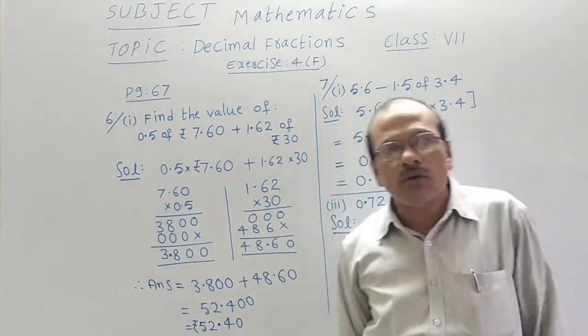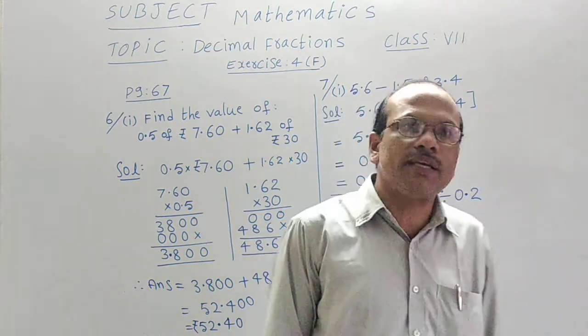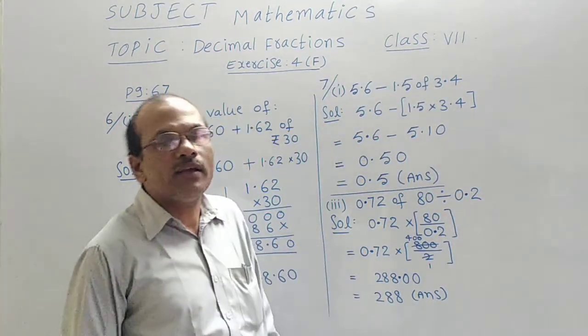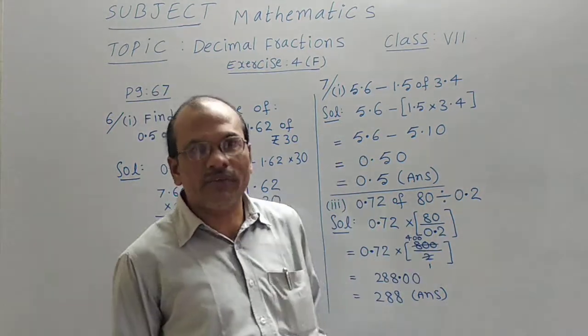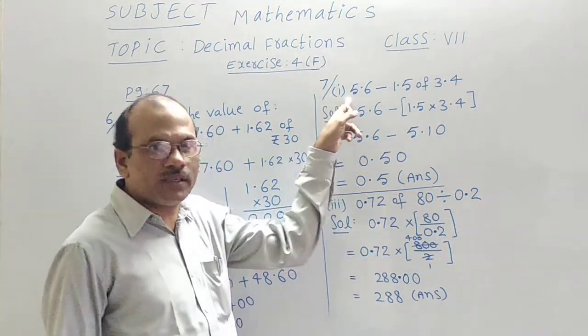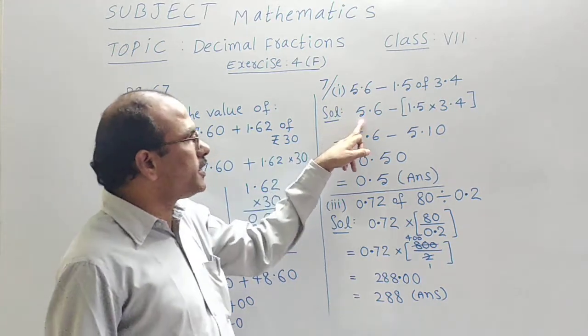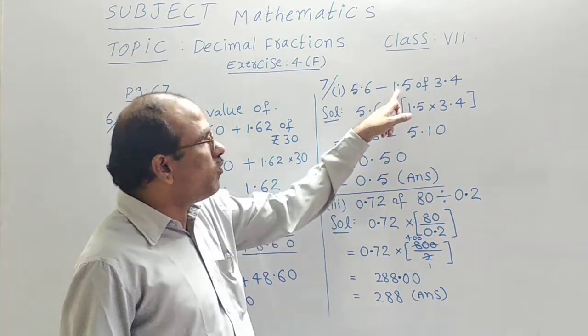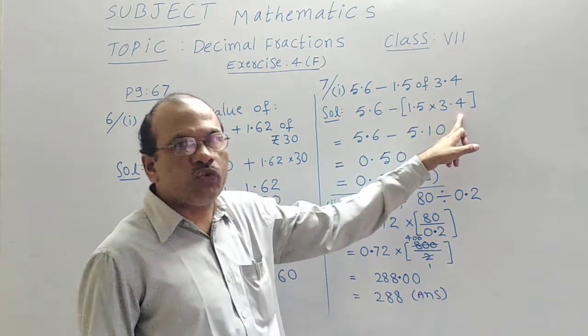In the same page 67, question number 7. There also we have to simplify or find the values which are given. See once. Seventh question first bit.